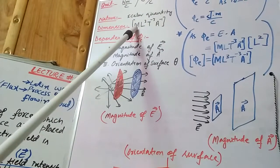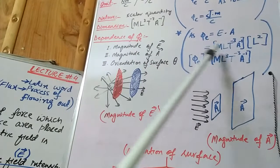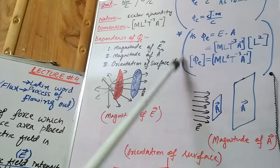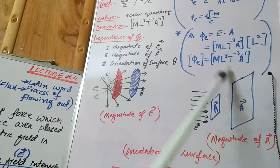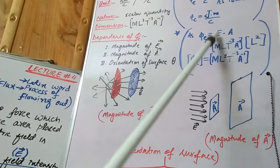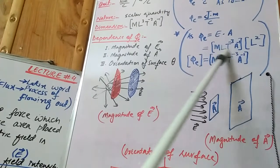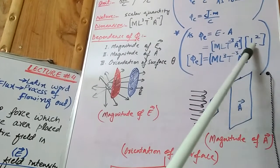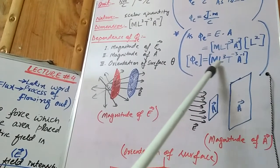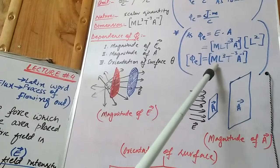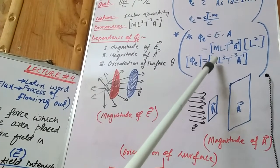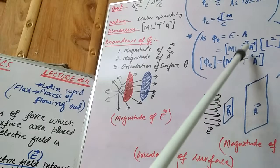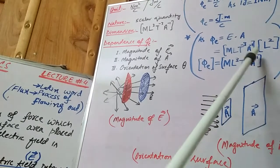How does this dimension come? I derive this dimension here. The dimension of electric field is M L T⁻³ A⁻¹, and the dimension of area is L². By multiplication, the overall dimension of electric flux is M L³ T⁻³ A⁻¹.